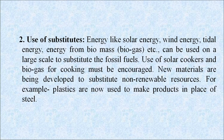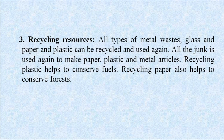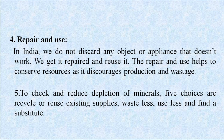Second is use of substitutes. Energy like solar energy, wind energy and tidal energy can be used on a large scale to substitute fossil fuels. Use of solar cooker and biogas for cooking must be encouraged. Plastics are now used to make products in place of steel. Recycling resources: all types of metal waste, glass, paper and plastic can be recycled and used again. All the junk is used again to make paper, plastic and metal articles. Recycling plastic helps to conserve fuel. In India, we get appliances repaired and reuse them, which helps to conserve resources.